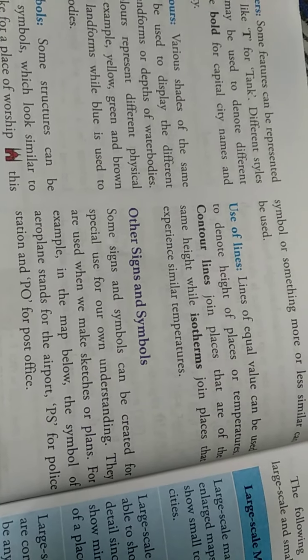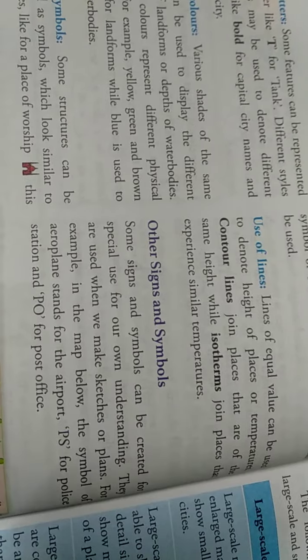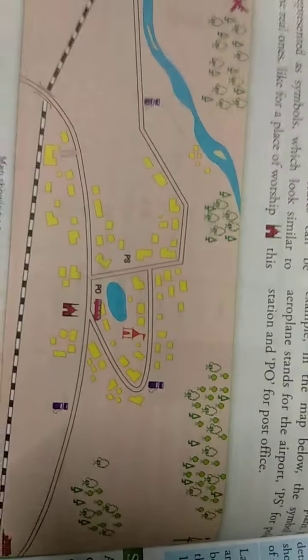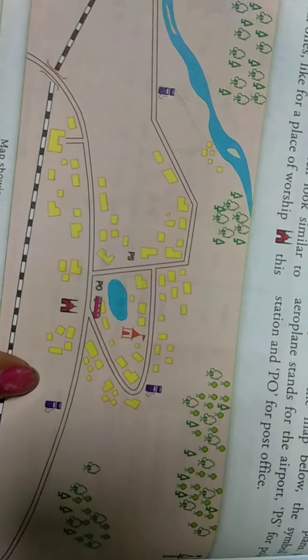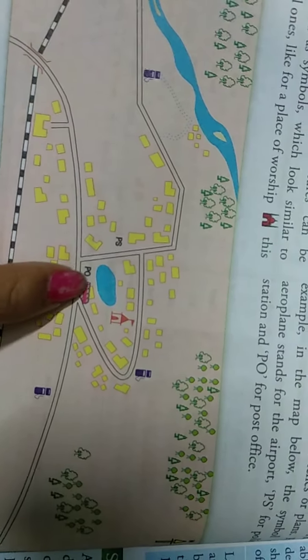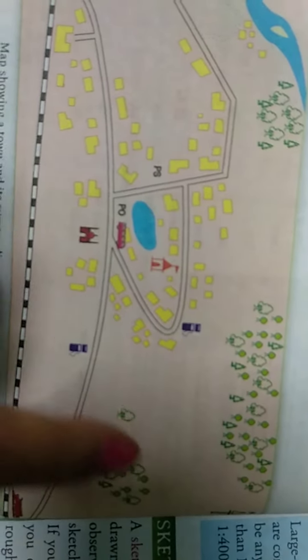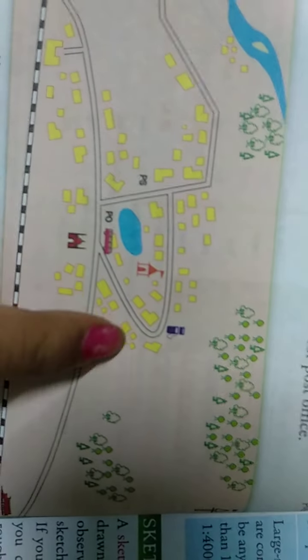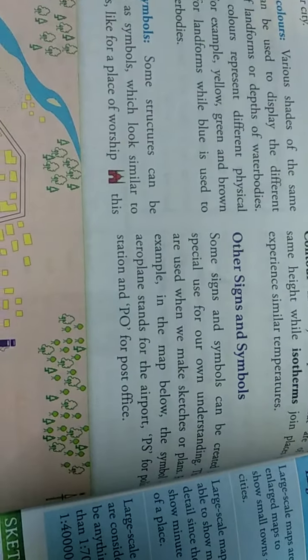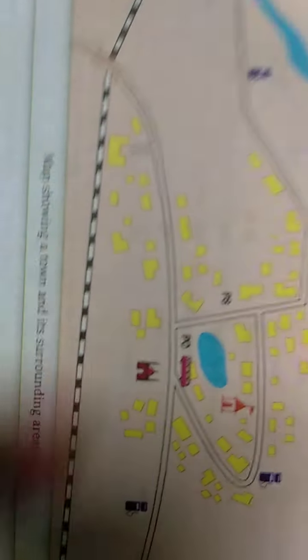These are used when we make sketches or plans. An example of a map is given below. Here are the signs like temples, mosques, bus stand, post office. This is road, plantations, housing. Such symbols are used for drawing a map. PS for police station, these are petrol pumps.